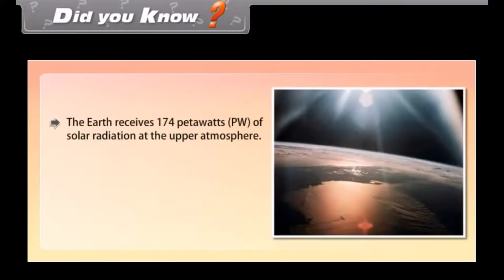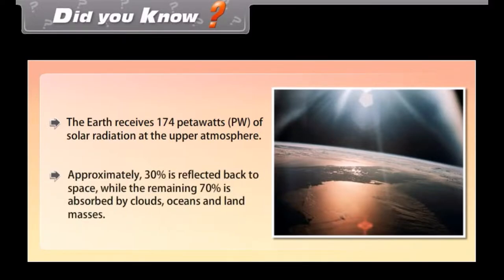Did you know? The earth receives 174 petawatts of solar radiation at the upper atmosphere. Approximately 30% is reflected back to space, while the remaining 70% is absorbed by clouds, oceans, and land masses.